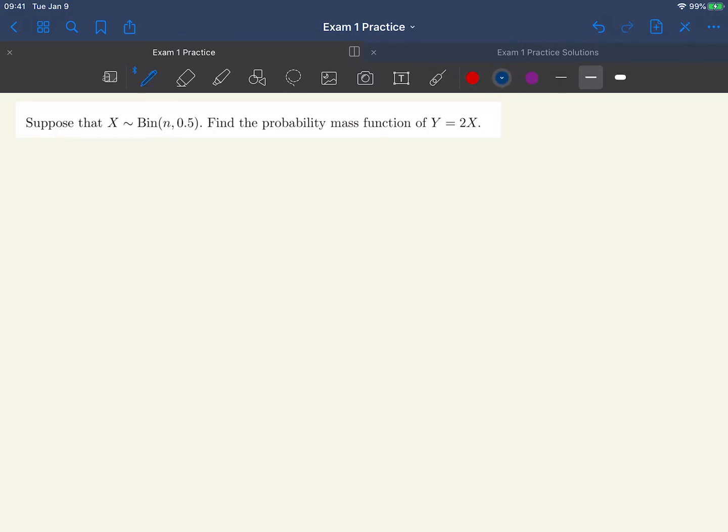To begin with, let's write down the PMF of the random variable X. The probability that X equals x is n choose x, p to the x, 1 minus p to the n minus x. This is just the standard formula for the PMF of a binomial random variable.